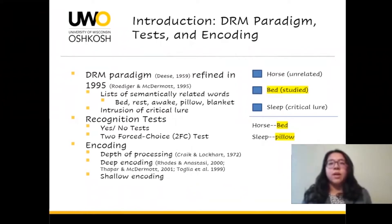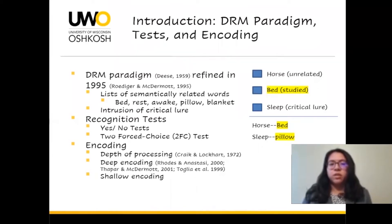The other commonly used recognition test is called a two-forced choice test. In this test, instead of having the words singly listed, the words are put into pairs. You can see another example using the same words — horse and bed are a pair, where horse is the unrelated word, bed is the studied word, sleep would be the critical lure, and pillow is the studied word.